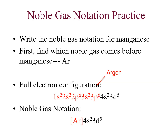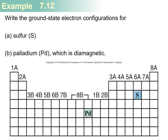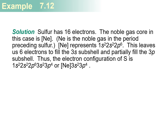Another example is manganese. To write its electronic configuration, find the noble gas before manganese, which is argon. Write argon in brackets, then since manganese is in the fourth period, it is [Ar] 4s² 3d⁵. There are also examples for sulfur and palladium provided on the slides — you can go through these and write in the comments below if you have any difficulty.